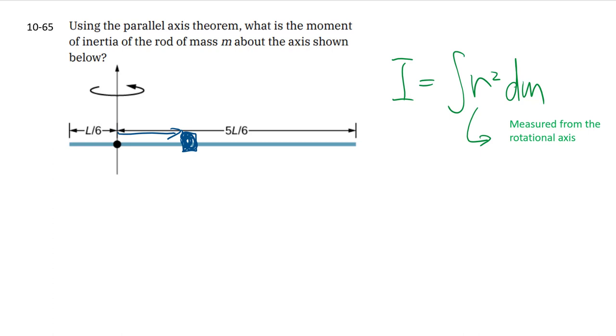So hopefully you can appreciate that if we spin this rod here, instead of at that point, but maybe at that point, we would expect to get a different moment of inertia, because now the r is different.